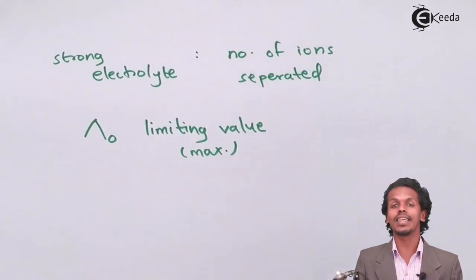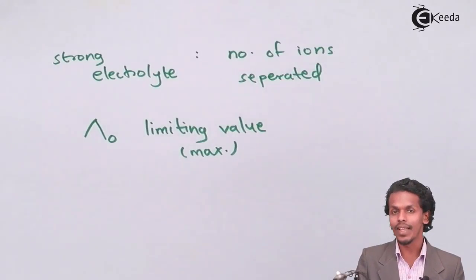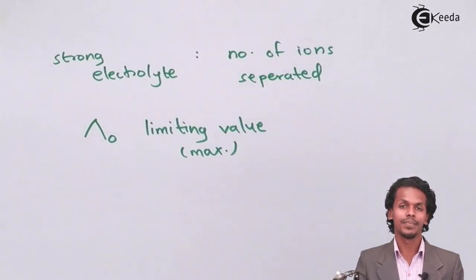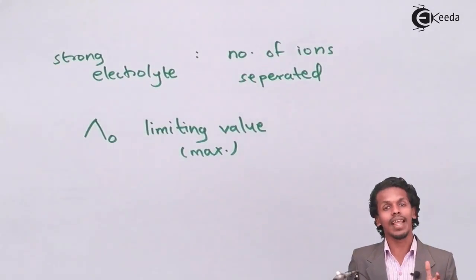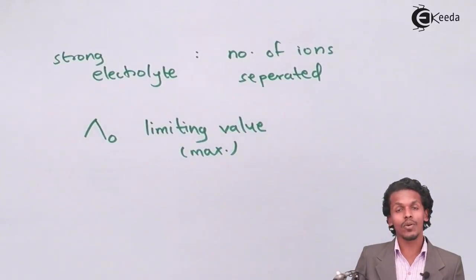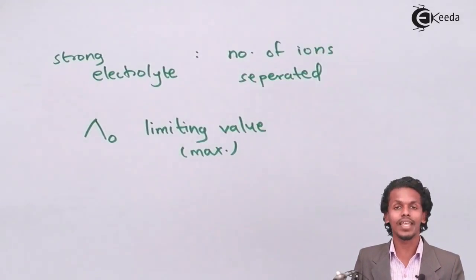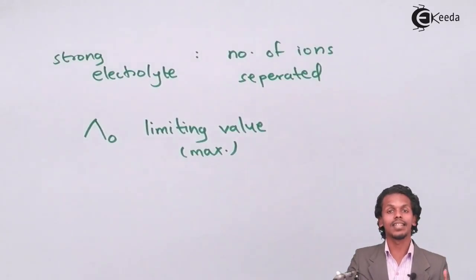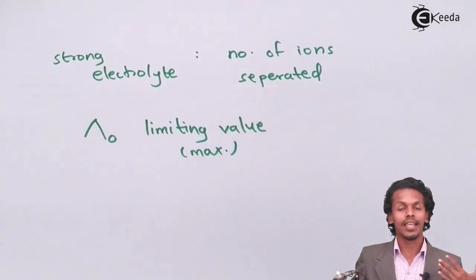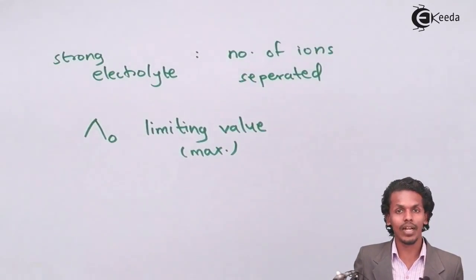These are the two differences: for a weak electrolyte, the value will not match up with the limiting value of a strong electrolyte. The molar conductivity for a strong electrolyte will be maximum compared to that for a weak electrolyte. Strong electrolytes have a good limiting value whereas weak electrolytes have a lesser limiting value.